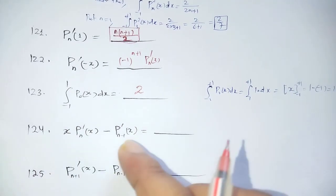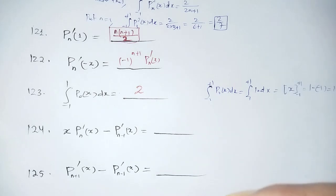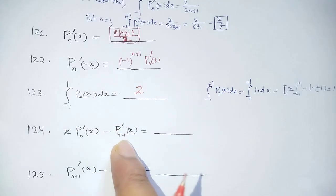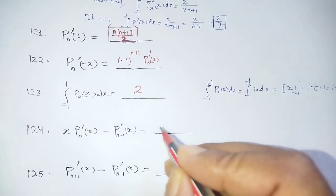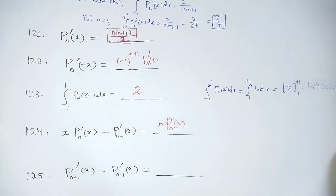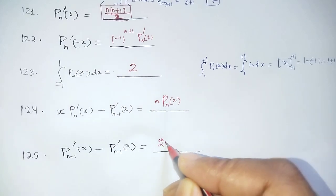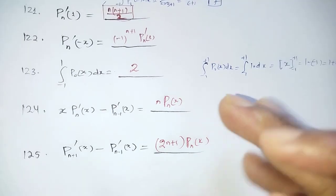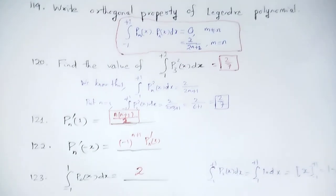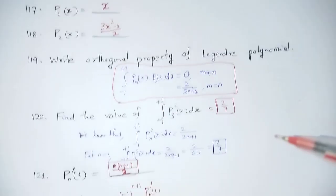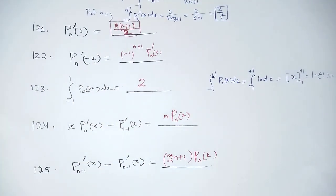Questions 104 and 105 are about recurrence relations of Legendre Polynomials. The recurrence relation is: x·Pn' = n·Pn-1'(x)(2n+1)Pn(x). You should memorize the Legendre Polynomial recurrence relations, as all related questions can be solved using them.